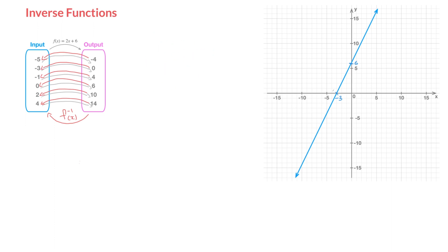Let's see how to find the expression for an inverse function. Starting from f(x) = 2x + 6, we can find this function's inverse function in two steps. Step 1 is to start from the expression y = 2x + 6 and rearrange this to make x the subject. The first thing I'll do is get rid of this 6, which is being added to the right-hand side, by subtracting 6 from both sides of the equation. That leads us to y minus 6 equals 2x.